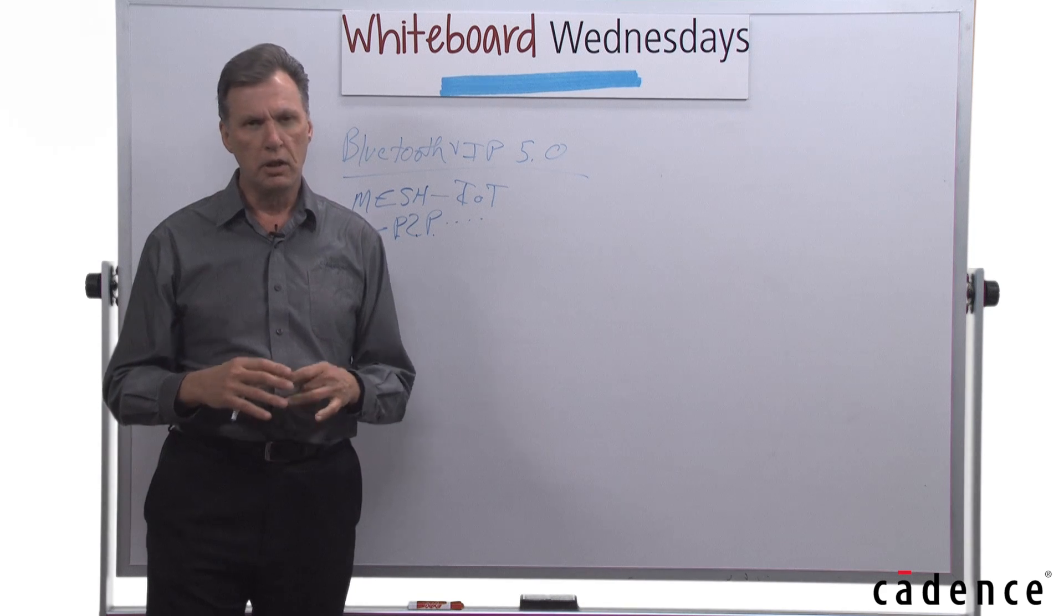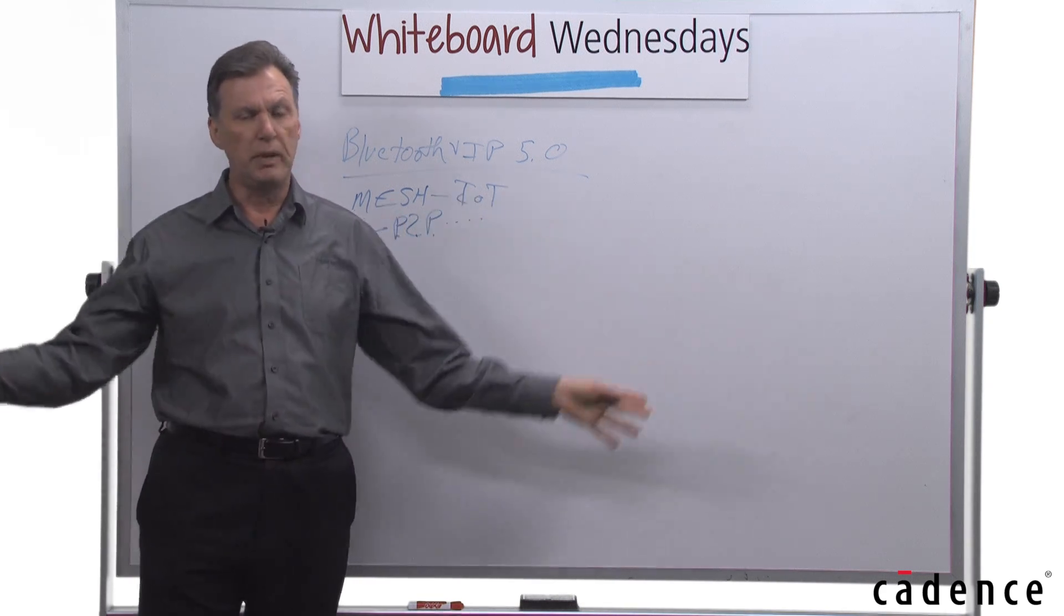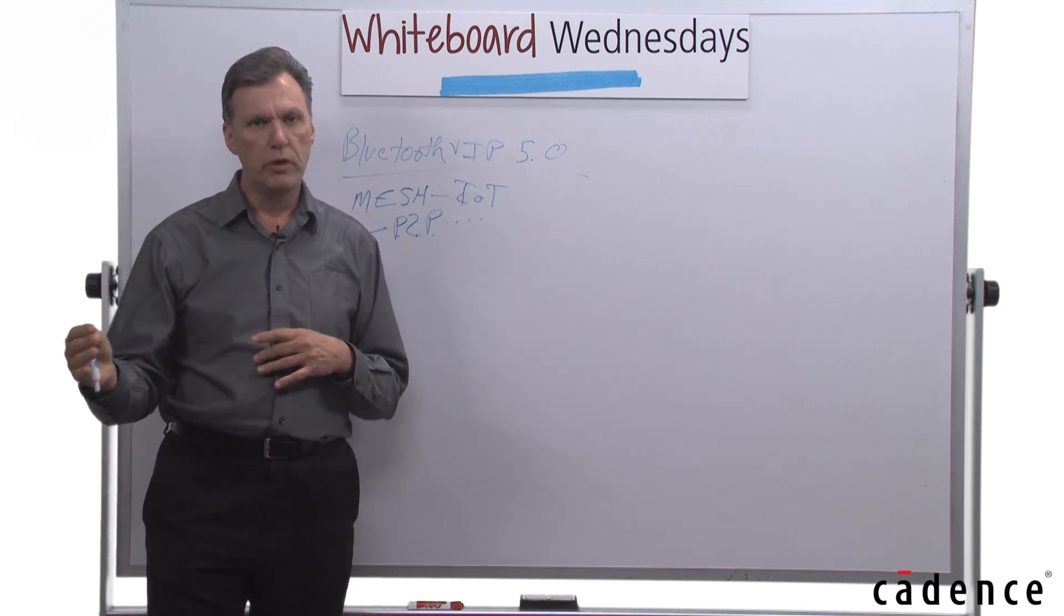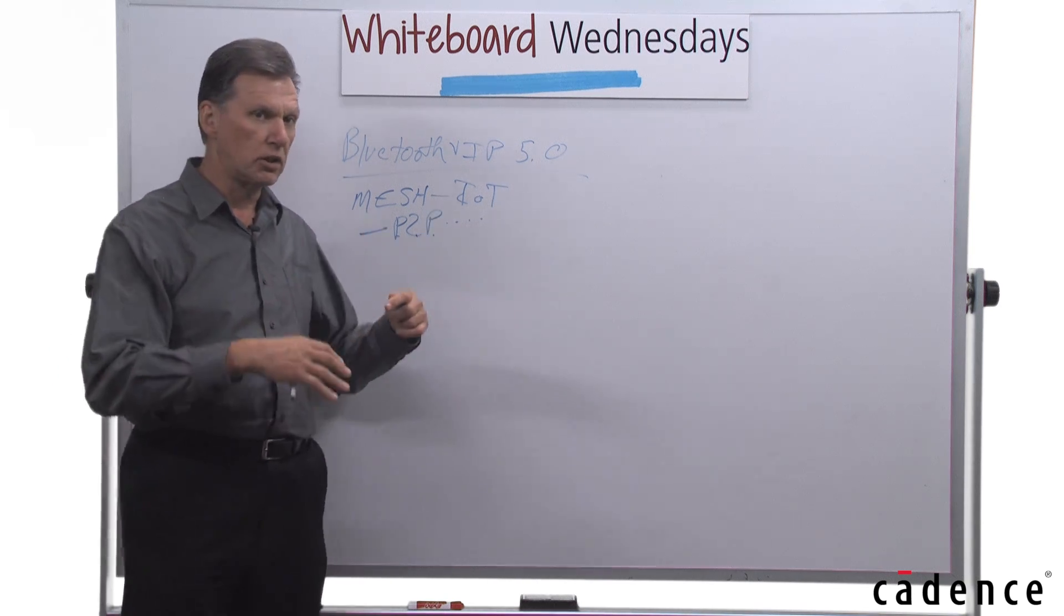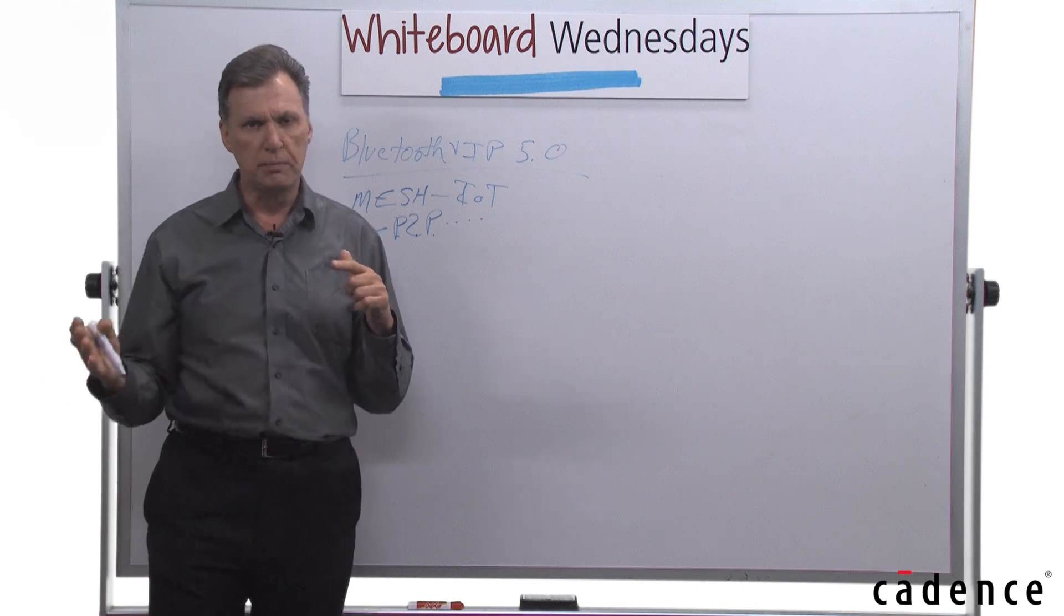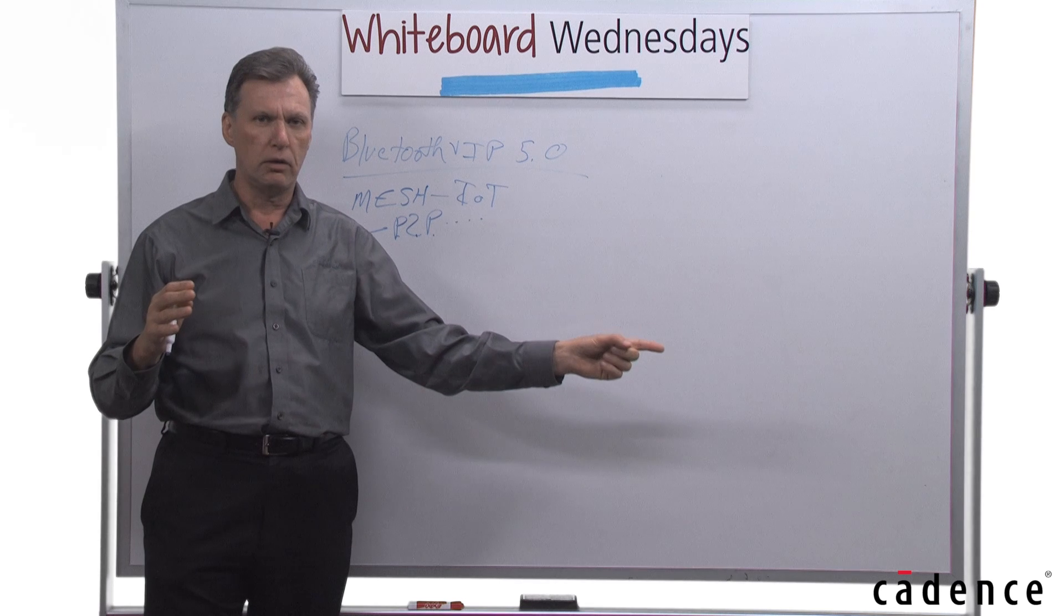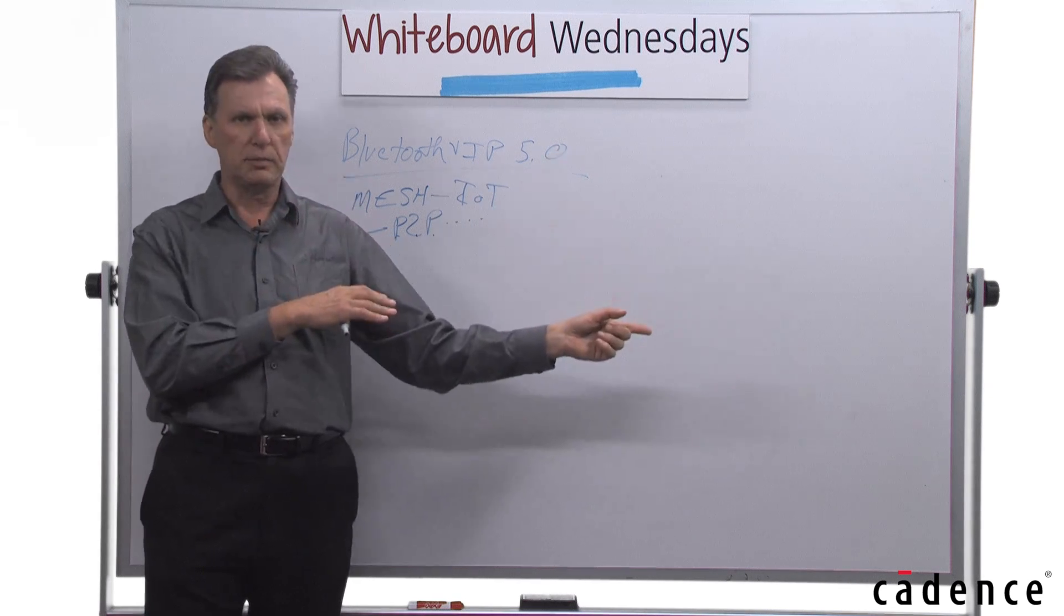So, a phone could be part of a mesh, and then there could be multiple speakers that are also part of the mesh, and you don't have to pair to every speaker with your phone in order to play there. You could actually play audio to one speaker and move through the mesh to another part of a building or another part of your house, and it automatically knows that there's another speaker available there.